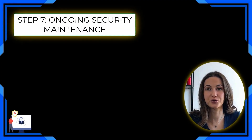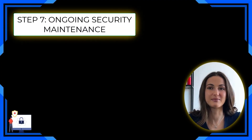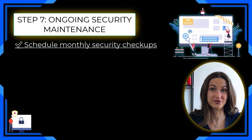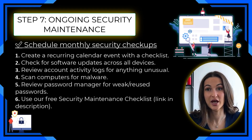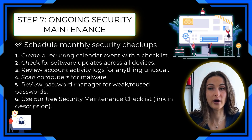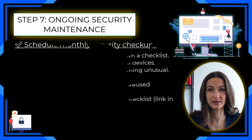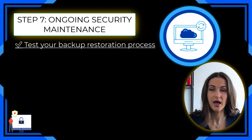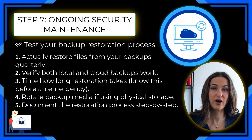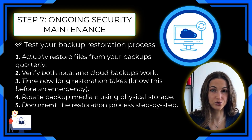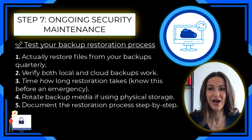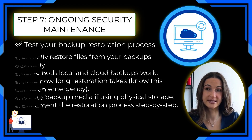Step number seven: ongoing security maintenance. Security isn't set-and-forget — it requires maintenance. Schedule monthly security checkups by creating a recurring calendar event with a checklist: check for software updates across all devices, review account activity logs for anything unusual, scan computers for malware, and review your password manager for weak or reused passwords — use the free security maintenance checklist linked in the description. Also test your backup restoration process quarterly — restore files from your backups, verify both local and cloud backups work, time how long restoration takes, rotate backup media if using physical storage, and document the restoration process step by step.